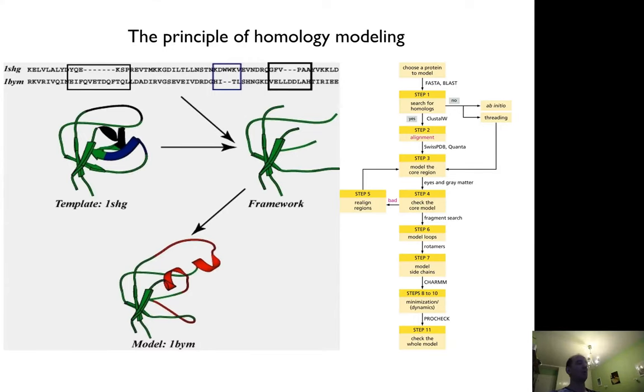The whole idea of homology modeling is actually very simple. You can see it in the flowchart here to the right. It's basically you take a sequence, you search for homologs using any of the search methods we've already gone through in this course. And if you have a hit, you make some alignment. You can use a multiple alignment, whatever. You try to best model alignment. And then you model it.